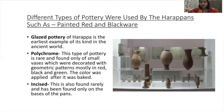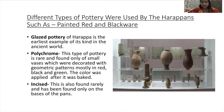Different types of pottery were used by the Harappans, such as painted red and black ware. The shapes of the pots are almost the same as what we use in present-day societies. There were various types of pottery: one was the glazed pottery of Harappa, which is the earliest example of its kind in the ancient world. Polychrome pottery is rare, found only on small vases decorated with geometric patterns mostly in red, black and green. Incised pottery is also found rarely. Cooking utensils at the bottom layer show no design.